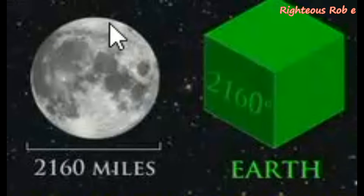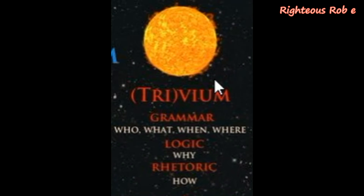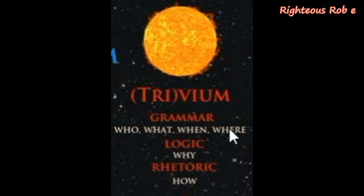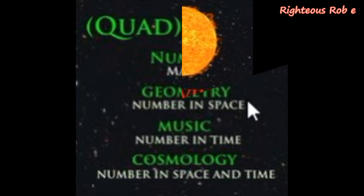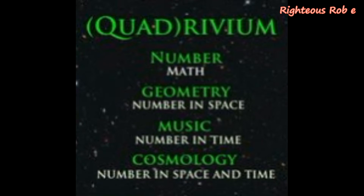The twenty-five thousand nine hundred and twenty year total cycle. The three-four-five triangle is represented by the three letters of the Sun — the trivium, the ancient art of grammar: who, what, when, where; logic: why; and rhetoric: how. The trivium — grammar, logic, rhetoric — represented in the three of the three-four-five triangle.